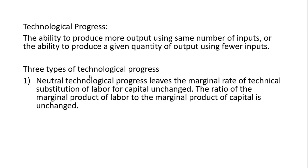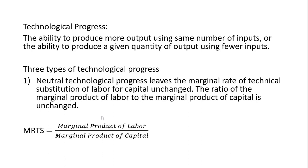There are three types of technological progress. The first is neutral technological progress. This leaves the marginal rate of technical substitution of labor for capital unchanged. The ratio of the marginal product of labor to the marginal product of capital — which is the MRTS, marginal rate of technical substitution — remains unchanged given a neutral technological progress. The MRTS is the marginal product of labor divided by the marginal product of capital.